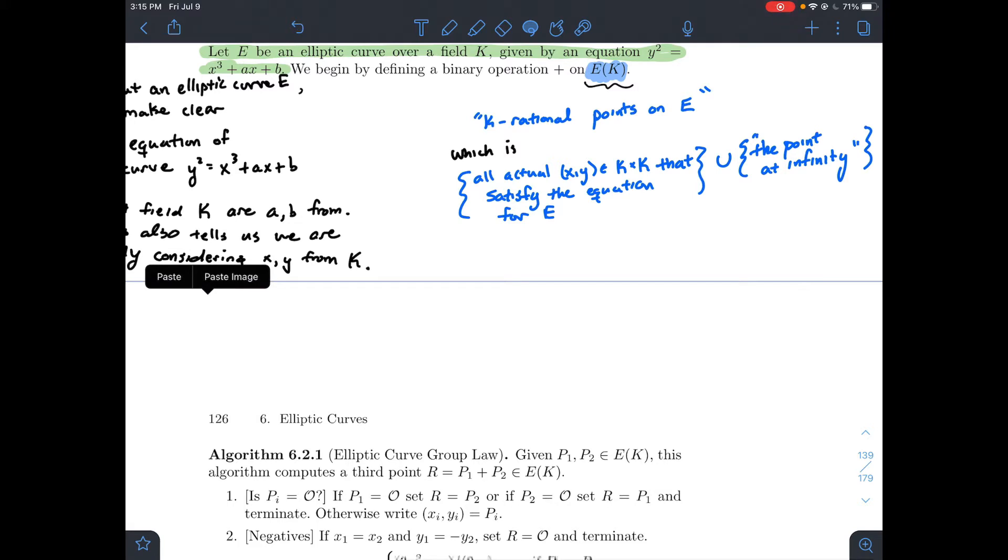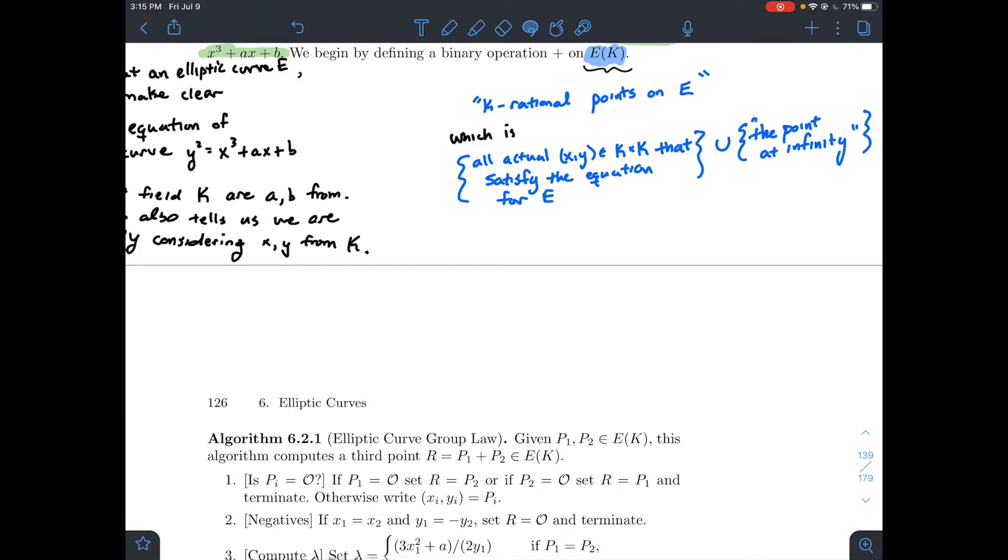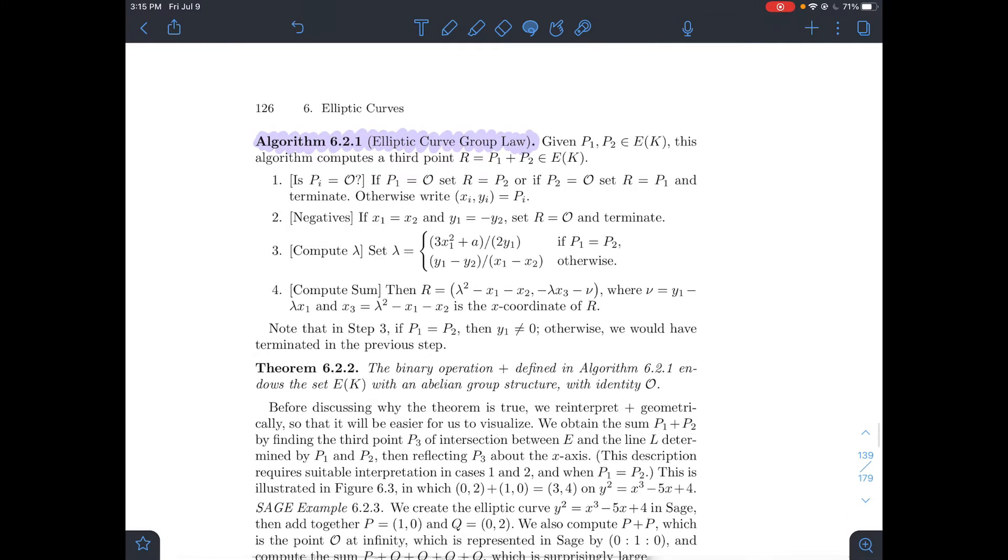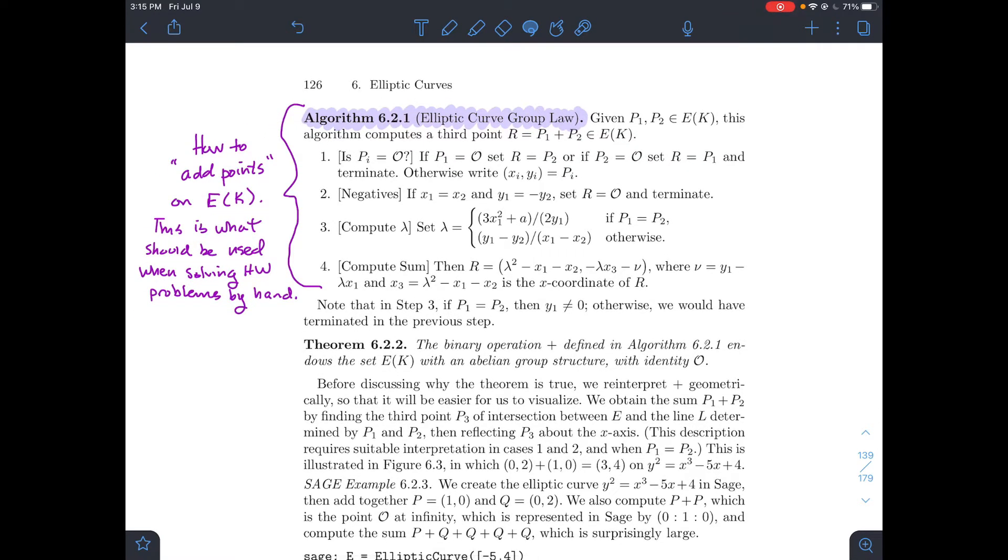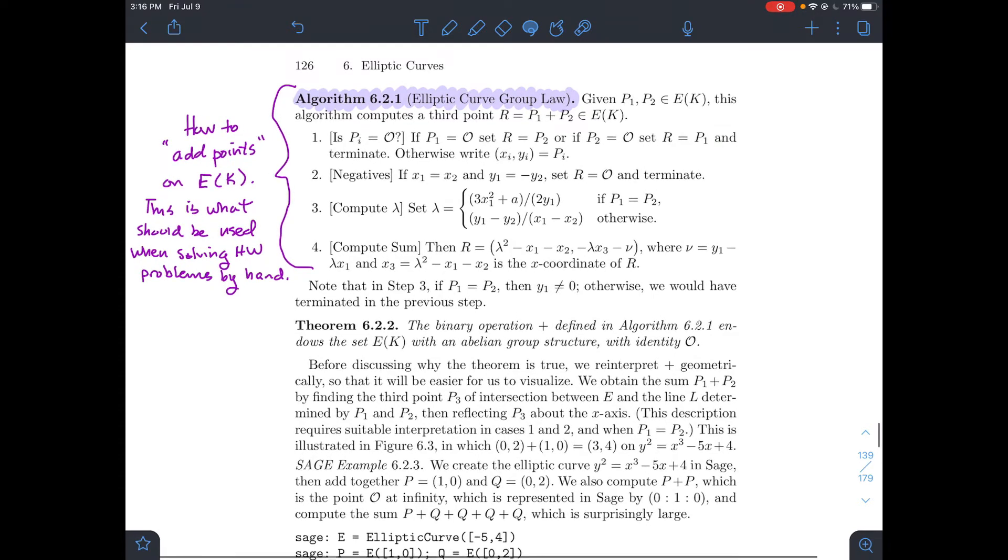So what we want to do again is try to define some way to add points on the curve E. In other words, we're going to make a group out of this set E(K). And so how to do that is on the next page here in Stein's book. We're going to look at algorithm 6.2.1. So this is what you should use to add points on E(K). And this is what you should use when you're asked to do something by hand in a number theory class about how to add points. And I'll also show you how to do this in SAGE. SAGE has this stuff kind of built in already. But let's go through it. So if you're given two points, p1 and p2, that are in E(K), this algorithm is going to compute the third point. Denote the third point by r, but just remember r stands for p1 plus p2. And we want that to also be a point that's on this elliptic curve's graph.